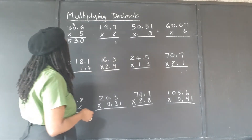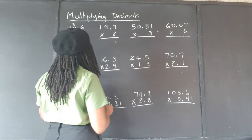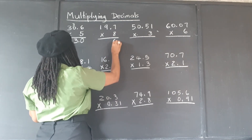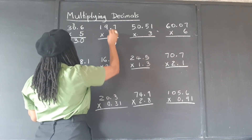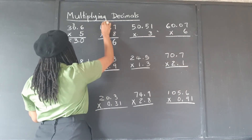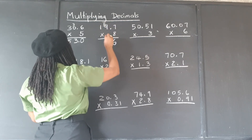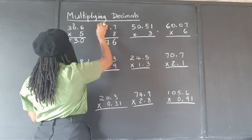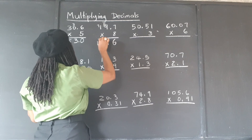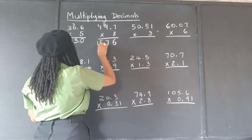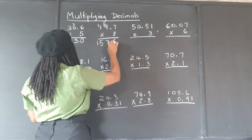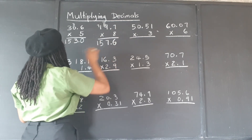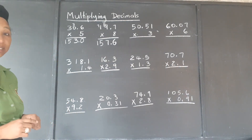19.7 times 8. 8 times 7 is 56. 8 times 9 is 72, plus 5 is 77. 8 times 1 is 8, plus 7 is 15. There is one decimal place in the multiplicand, so we put back one decimal place in the answer.